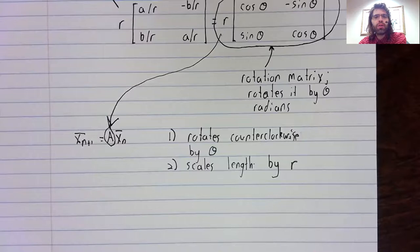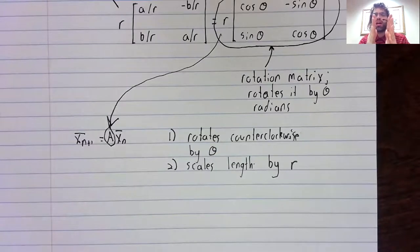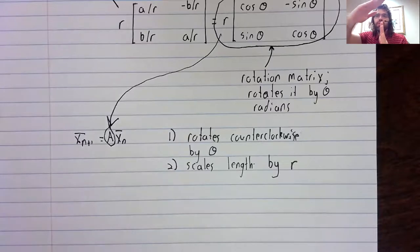R ends up being 1.06. That's greater than one. So every time you multiply by R, this vector is getting bigger. And every time you multiply, this vector is also rotating by some angle. So what you should see is something like that.